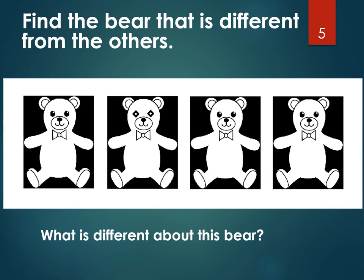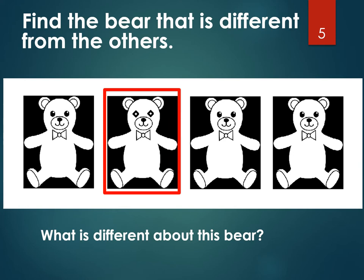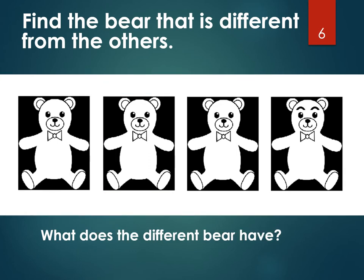Here's another set of bears. Can you find the bear that's different from the others? Look very carefully — it could be a little tricky, but I'm sure you have very sharp eyes. Did you point to this bear? If you did, you are correct. Can you tell me what's different about this bear? His eyes. All the other bears have round eyes, but this bear's eyes are square. Isn't that funny? Well done.